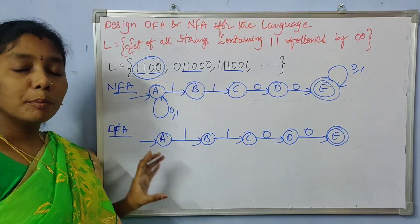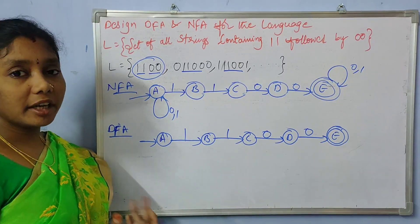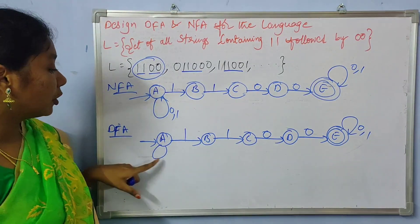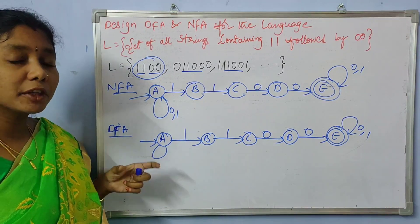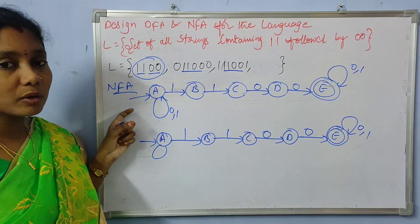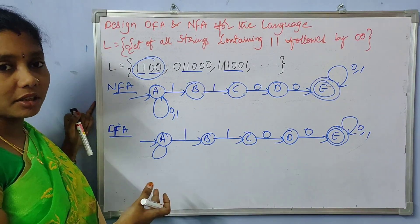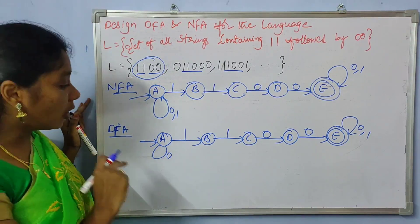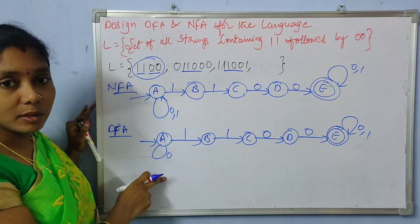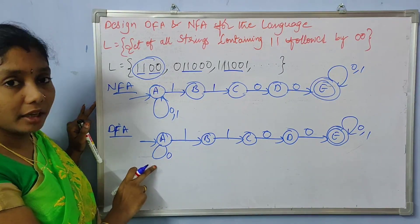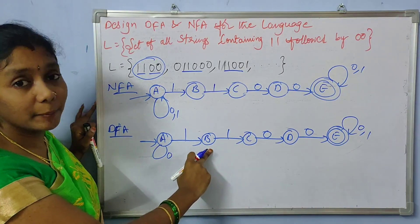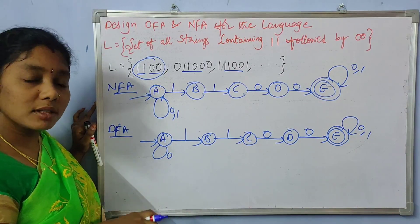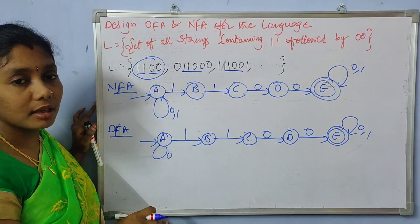We can have as many number of zeros and ones both at the beginning and ending of the string, meaning at the beginning and ending DFA states we have transitions with zero and one. From state A we can take a self-loop on zero. In DFA, at every state we need to have a transition with all input symbols — there is no such rule in NFA.